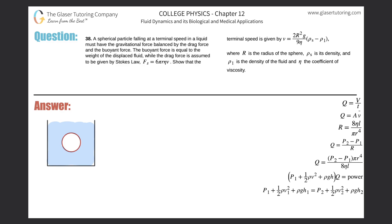Problem 38: a spherical particle falling at terminal speed in a liquid must have the gravitational force balanced by the drag force and the buoyant force. The buoyant force equals the weight of the displaced fluid, while the drag force is given by Stokes' law: F_s = 6πrηv. We need to show that the terminal speed is given by an expression involving radius, density of the sphere, density of the fluid, and the coefficient of viscosity.